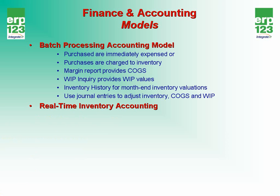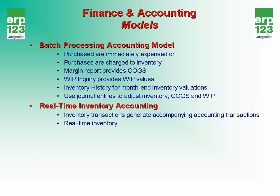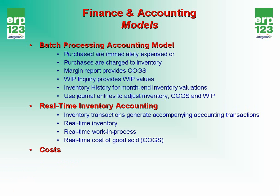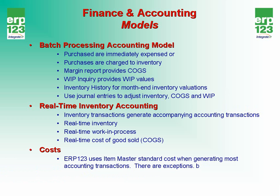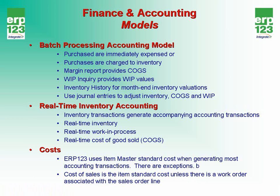ERP123 also provides what's known as real-time inventory accounting. In this case, inventory transactions will generate accompanying accounting transactions, producing real-time inventory valuations, real-time work in process, real-time cost of goods sold, as well as accruals for purchasing and shipping. Costs for the accounting system are normally based on the item master standard cost, and most accounting transactions use the item master standard cost when they are created, though there are exceptions. Cost of sales is normally the item standard cost, unless there is a work order associated with the sales order line, in which case the system will treat that work order as the standard cost for the particular sales order.